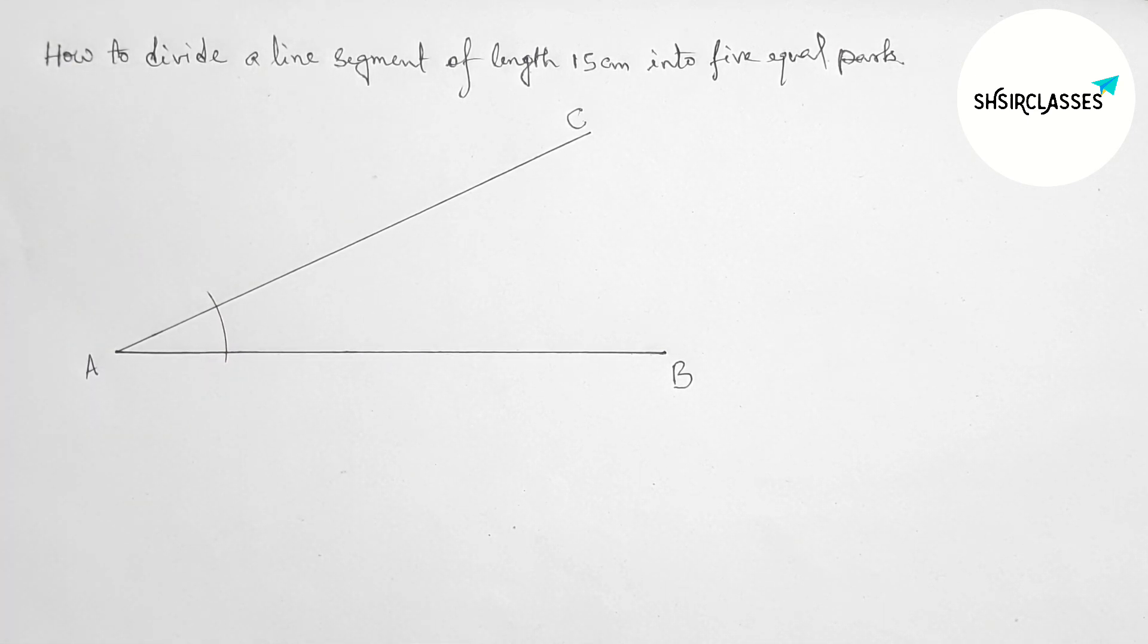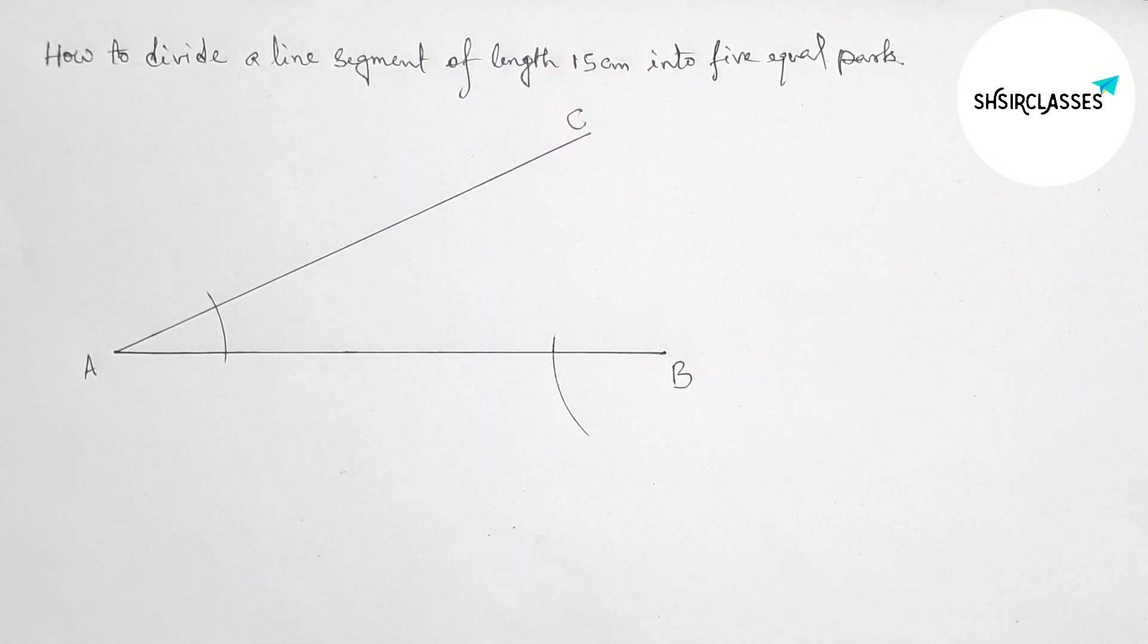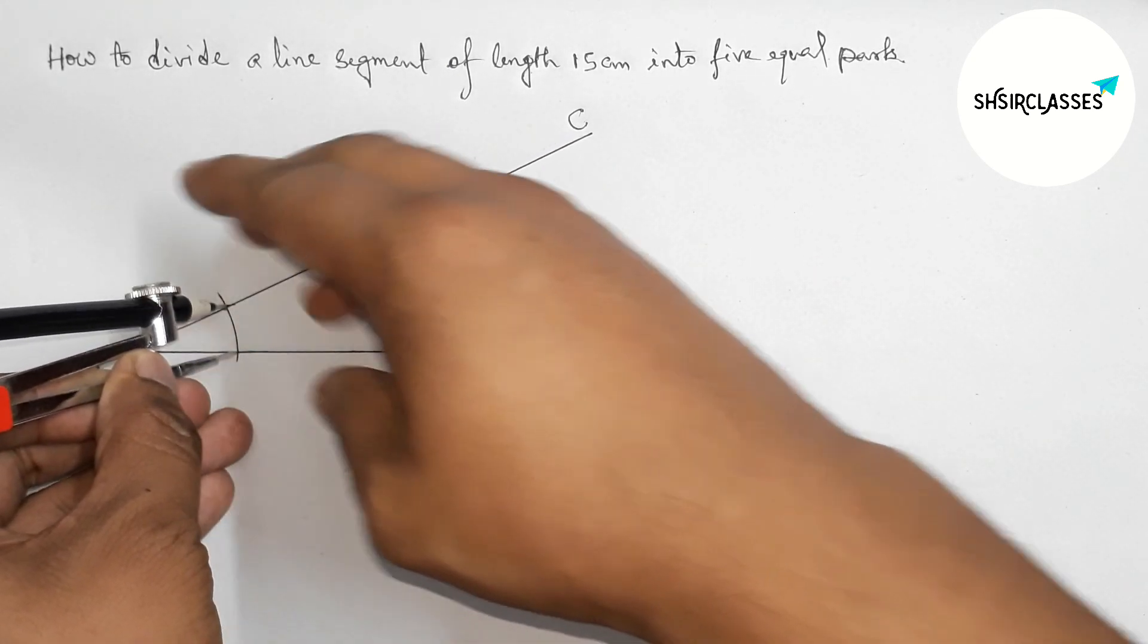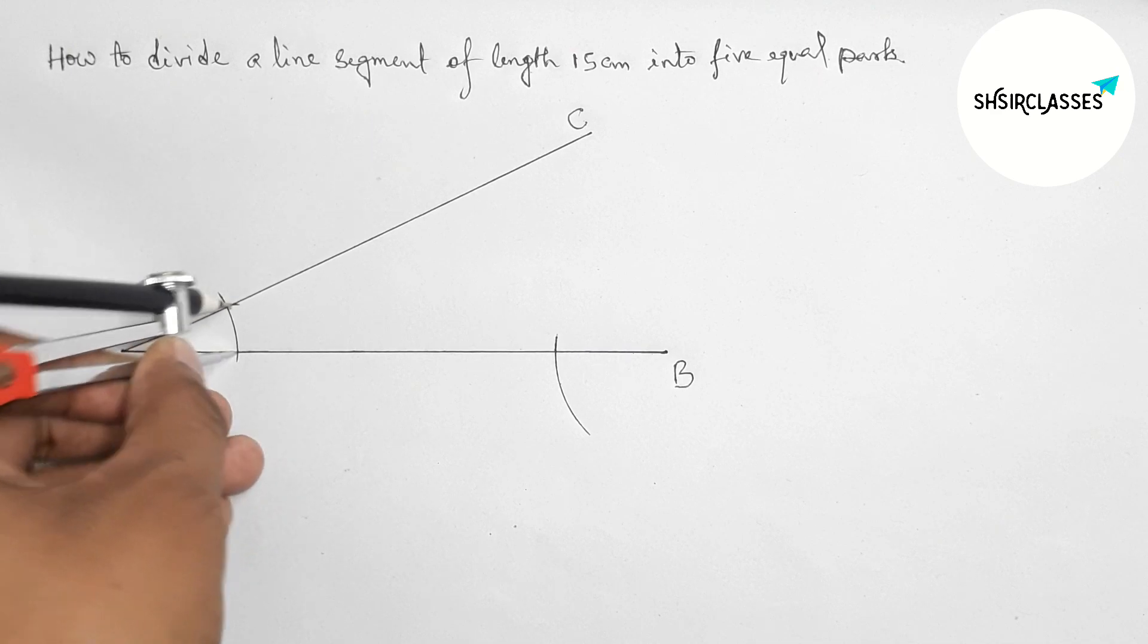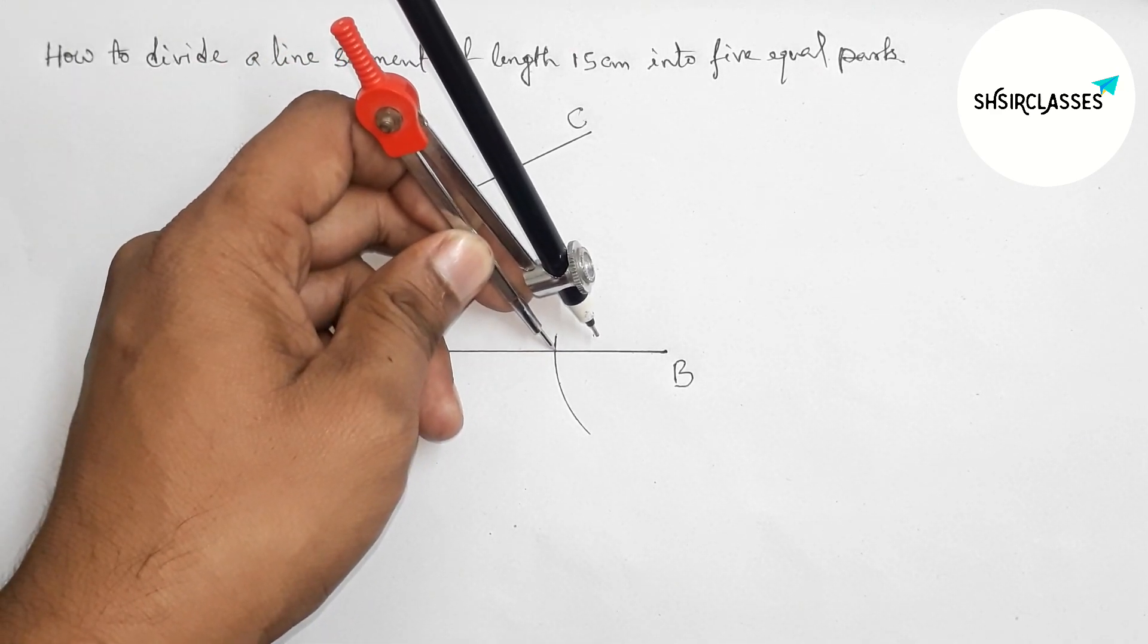First draw an arc with the same length, then put the compass on point B and draw an arc this way. Now take this length perfectly. Put the compass here with the same length and cut here.